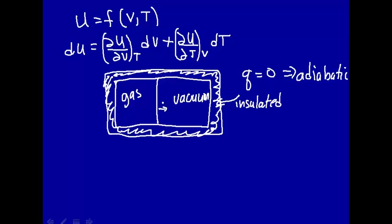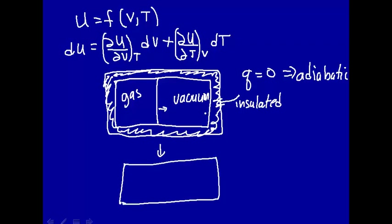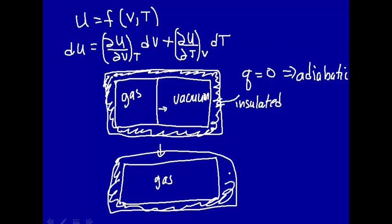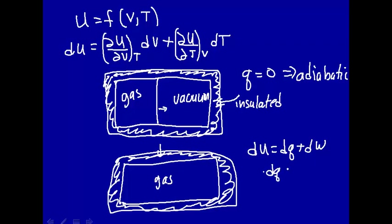What we're going to do is move this partition, which separates the gas and the vacuum, so that at the end of the process we've moved it all the way down and we just have gas. It's an insulated container, so we have no heat being transferred to or from the surroundings. Starting with the first law of thermodynamics in differential form: du equals dq plus dw. The process is adiabatic, so dq equals zero.